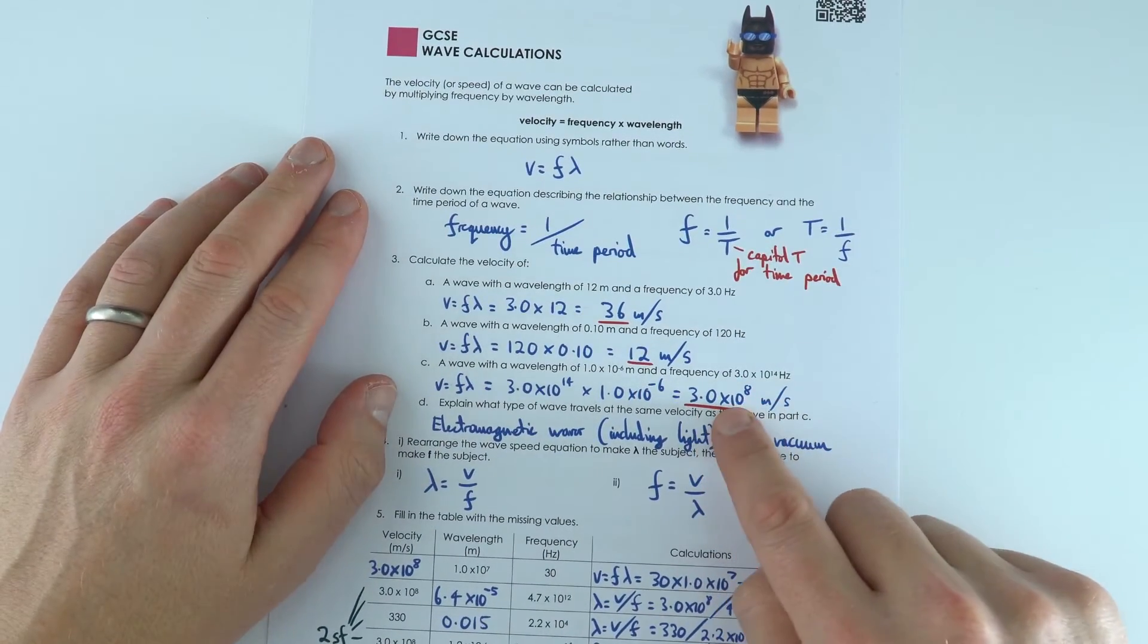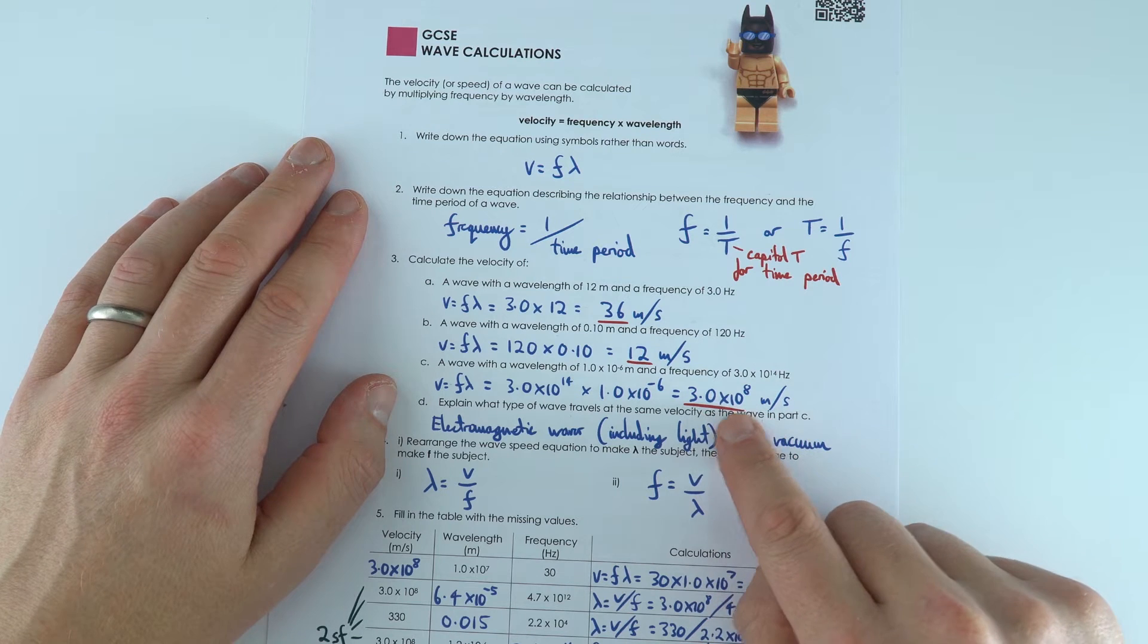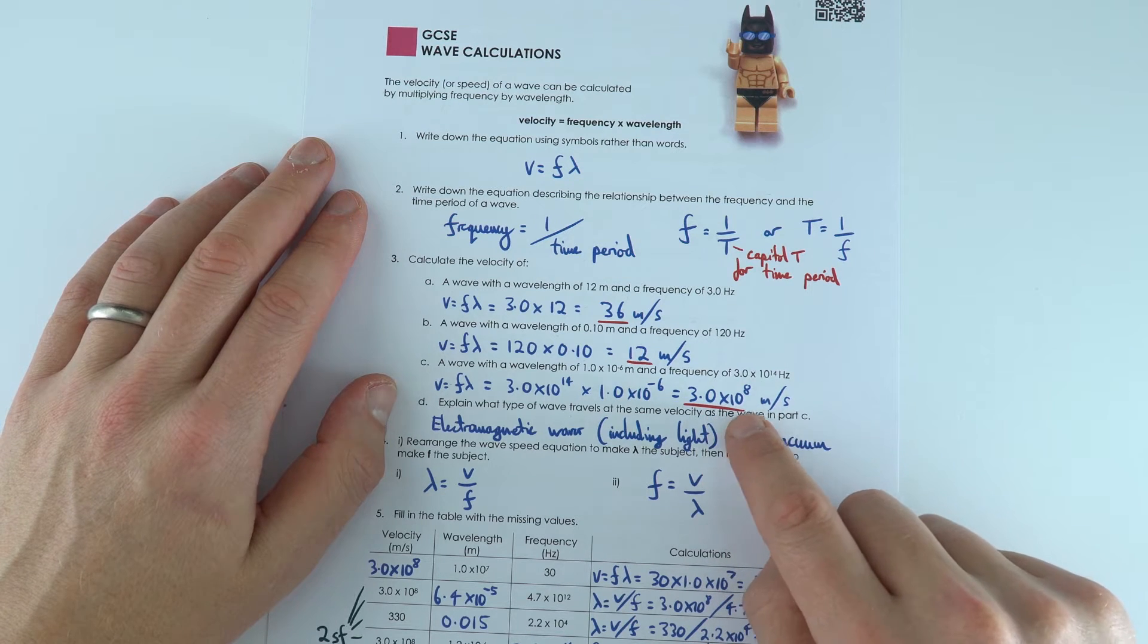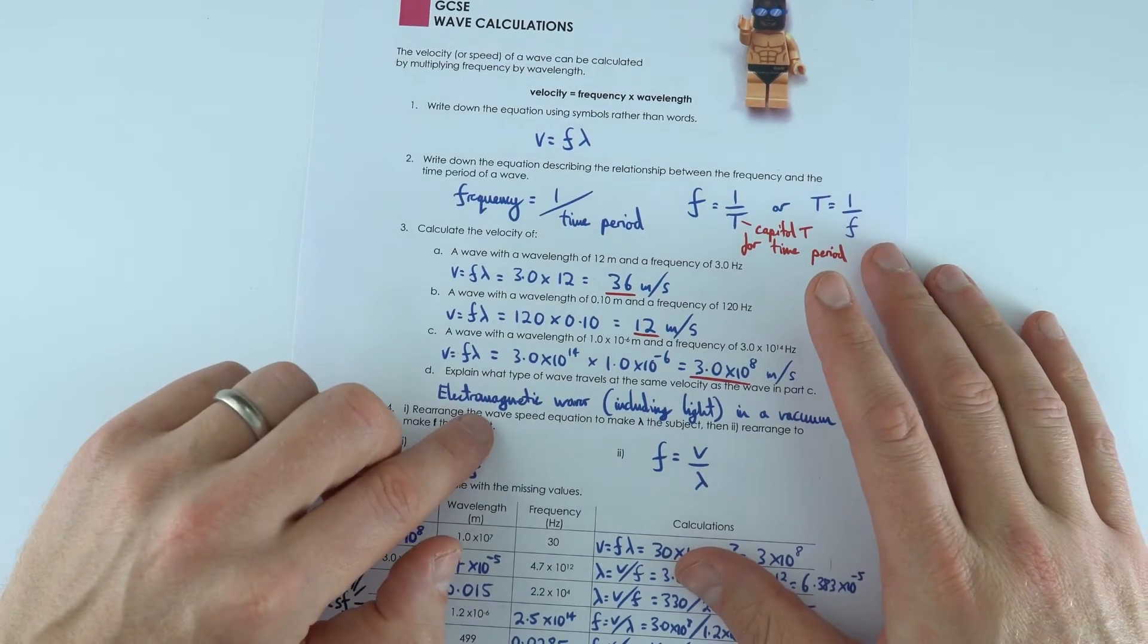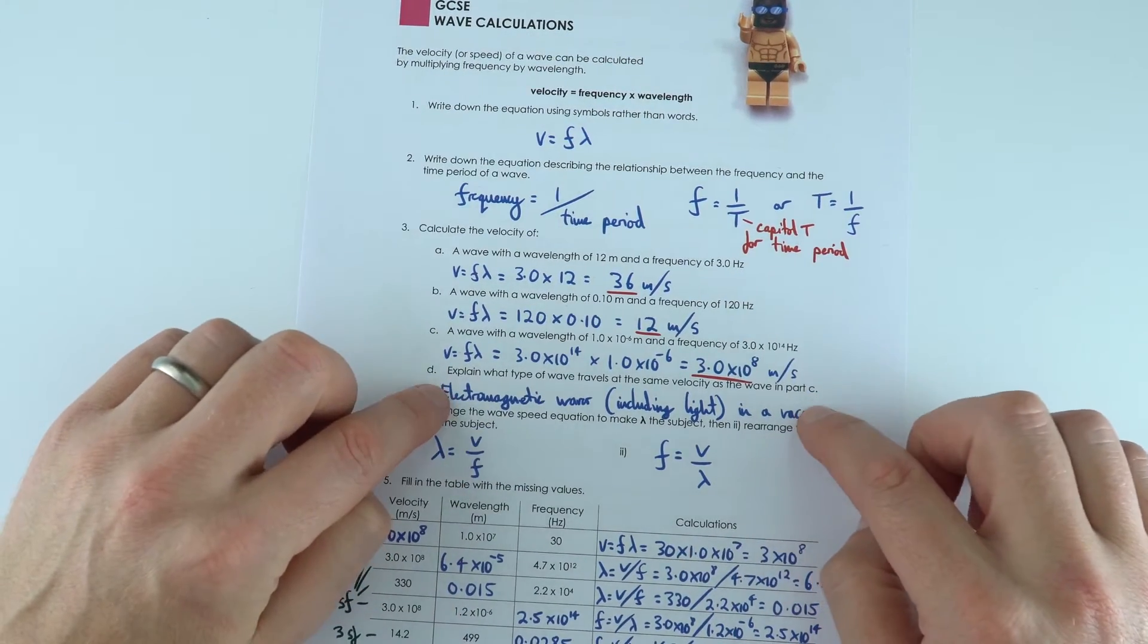This one here is really important: 3 times 10 to the 8, or 300,000 meters per second. That's the speed of light or indeed any electromagnetic wave in a vacuum. So that's going to come up all the time.